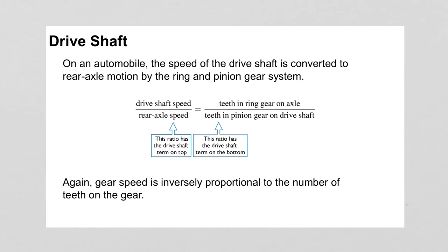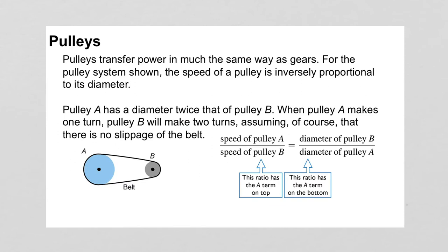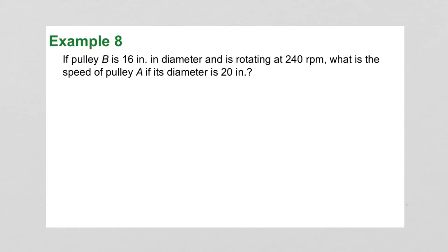One more topic, the drive shaft. On an automobile, the speed of the drive shaft is converted to rear axle motion by the ring and pinion gear system. This is an inverse proportion. The drive shaft speed over the rear axle speed is equal to the rear axle teeth over the drive shaft teeth. And pulleys transfer power much the same way as gears. The speed of pulley A over the speed of pulley B would be equal to the diameter of pulley B over the diameter of pulley A.